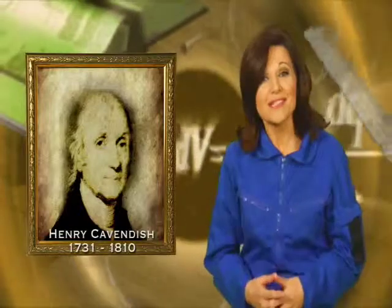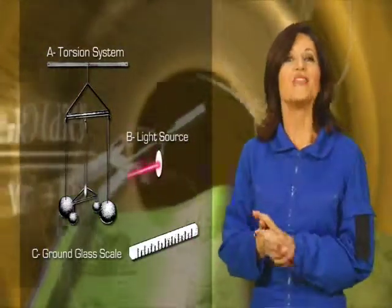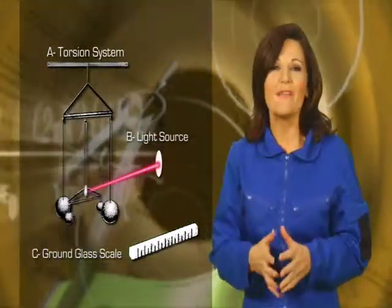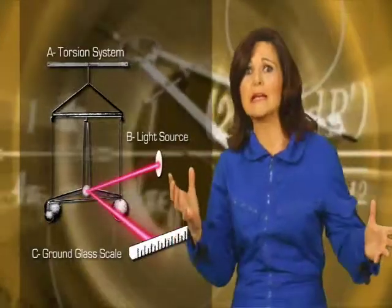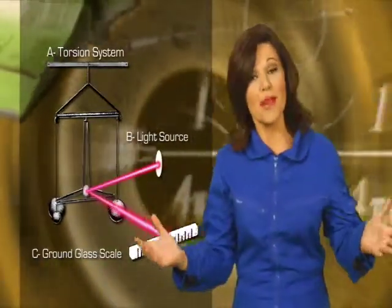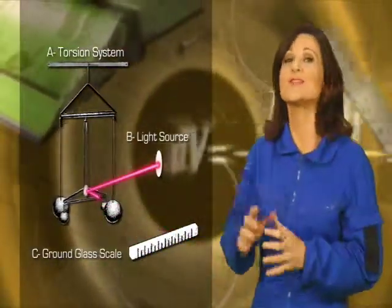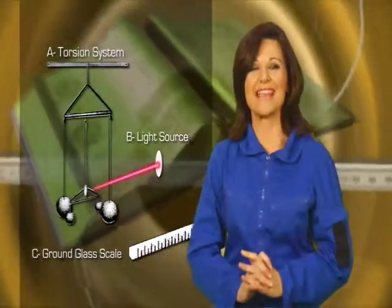Variations of Cavendish's results are still used today. Indeed. Now for this experiment, he used a device with a torsion balance, like that, to measure the gravitational attraction between two 350-pound lead spheres and a pair of two-inch, 1.61-pound lead spheres.